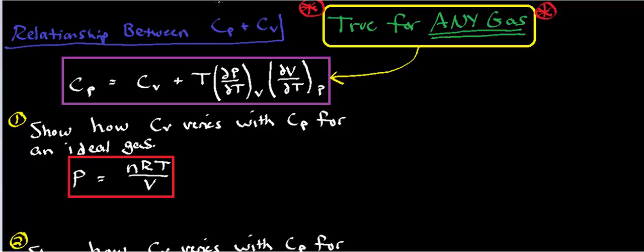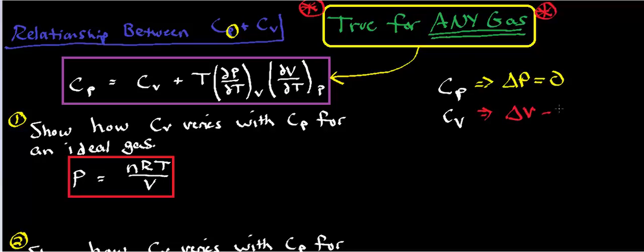The heat capacity at constant pressure is given by C sub P. In physical chemistry, when you have a little variable as a subscript on the right side of whatever function or variable you're talking about, that means that variable is kept constant. So C sub P corresponds to a change in pressure that's zero, meaning constant pressure. C sub V implies constant volume — the change in volume is zero. C sub P usually means an isobaric system; C sub V is isochoric.